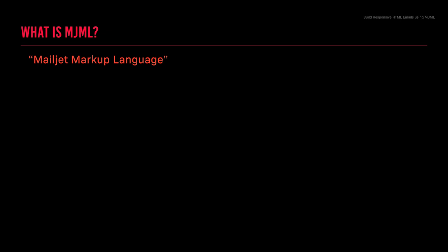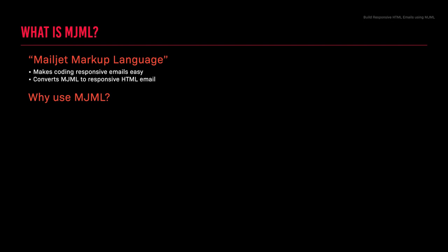So what is MJML? MJML stands for Mailjet Markup Language, created by Mailjet. The reason for MJML is to make coding responsive emails easy. MJML is a transpiler — it takes MJML as the input and converts it to responsive HTML email. It's a markup language with good documentation, so if you're used to HTML it should be easy to follow along. If you're creating a custom HTML email instead of relying on a template provided by a service provider, MJML makes that process much easier.